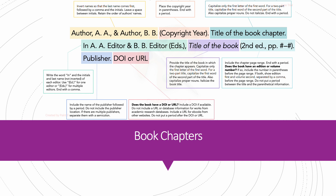Book chapters. There are more things to add when citing just the chapter of a book. When citing a book chapter, you will add the title of the book chapter after the date. Capitalize only the first letter of the first word; for a two-part title, capitalize the first word of the second part. Also capitalize proper nouns. Do not italicize. End with a period. Then, it's the editors. Write the word 'in' and the initials and last name, not inverted, of each editor. Use (Ed.) for one editor or (Eds.) for multiple editors. End with a comma.